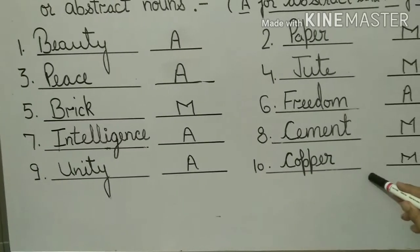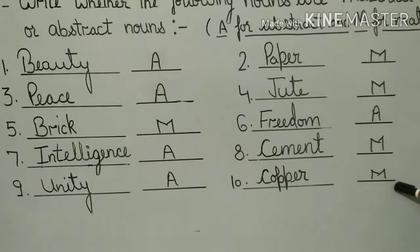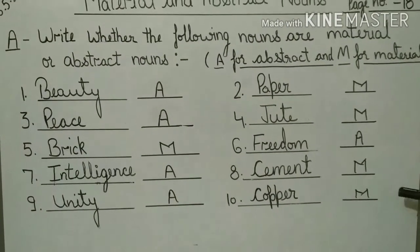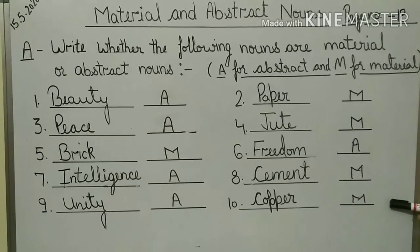Copper. Copper is a material by which we can make utensils. So it is material noun. Now you do this exercise in grammar book and learn the definition of material noun and abstract noun.